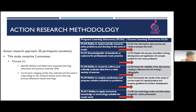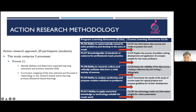This study comprises three processes. The first is to identify ability and determine expected learning outcome and practice essential skills. As you can see on the table, this course comprises five PLOs related to five CLOs, which relate to research learning — such as PLO number eight: the ability to research, collect, and critically evaluate data from a wide variety of sources. The CLOs need to support the PLOs so that when we complete the semester, students have gained all PLOs and CLOs of this course.